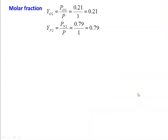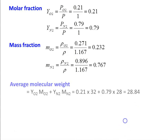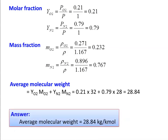Mole fraction: YO2 = PO2/P = 0.21. YN2 = PN2/P = 0.79. Mass fraction: MO2 = ρO2/ρ = 0.232. MN2 = ρN2/ρ = 0.767. Average molecular weight = YO2·MO2 + YN2·MN2 = 0.21×32 + 0.79×28 = 28.84 kg/kg·mol.